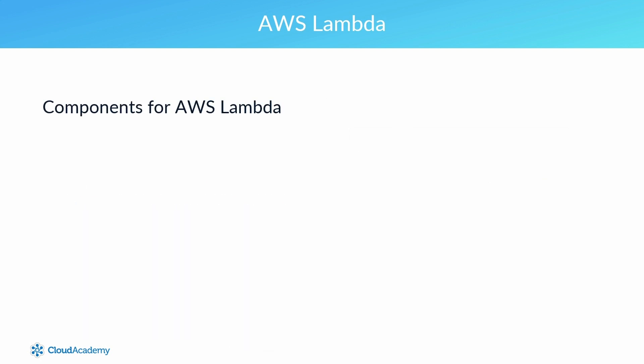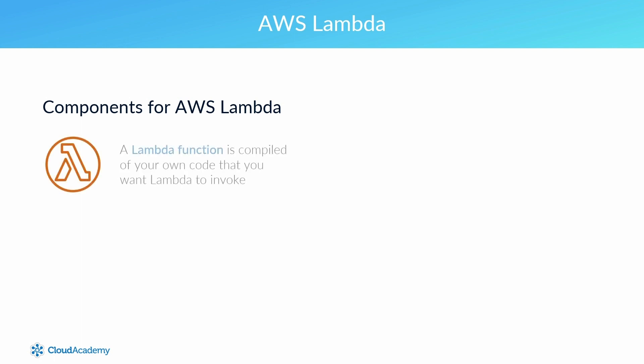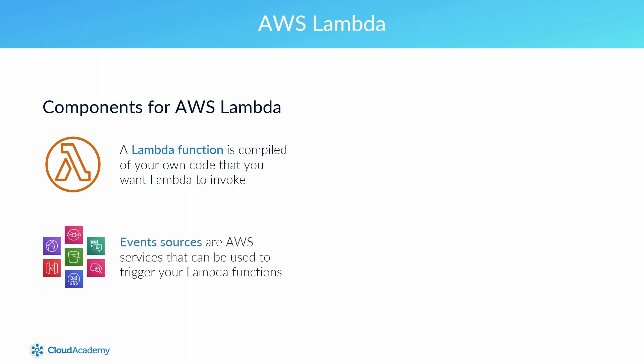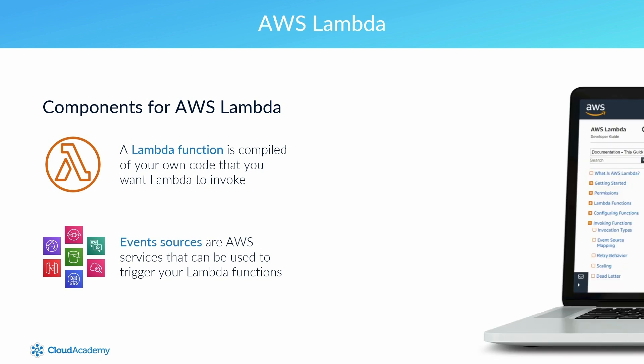For an AWS Lambda application to operate, it requires a number of different elements. The following form the key constructs of a Lambda application. The Lambda function is compiled of your own code that you want Lambda to invoke as per the defined triggers. Event sources are AWS services that can be used to trigger your Lambda functions — they produce the events that your Lambda function essentially responds to by invoking it.